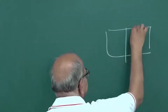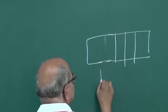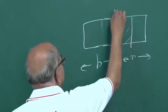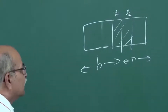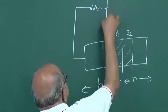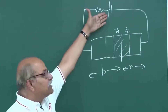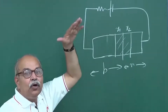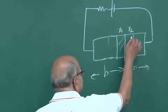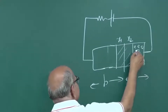If you have this PN junction with a depletion layer — this is the P side, this is the N side, and this is the depletion layer of width x1 on the P side and x2 on the N side — and you connect the P side to a higher voltage, that is forward biasing. By applying this voltage you lower that barrier and then diffusion takes place in large amounts.